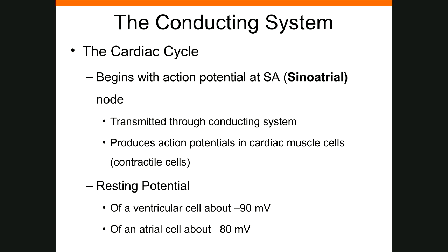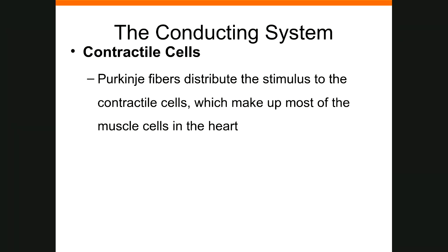The cardiac cycle begins with an action potential, as we just explained, and the SA node transmits it through the conducting system, producing action potentials in cardiac muscles. The resting potential for the ventricles is around minus 90 millivolts and the atrium is about minus 80 millivolts. The Purkinje fibers distribute the stimulus to the contractile cells that make up most of the heart's muscle. Let's look at the conduction through the heart.